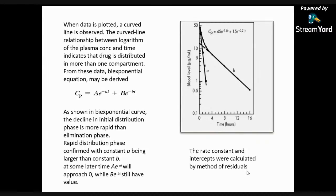The rapid distribution phase is confirmed by constant A being larger than constant B. At a later time, Ae^(-αt) will approach zero, while Be^(-βt) still has some value remaining because elimination is still ongoing. When Ae^(-αt) is zero, distribution or absorption is complete. The rate constants and intercepts were calculated using the method of residuals.